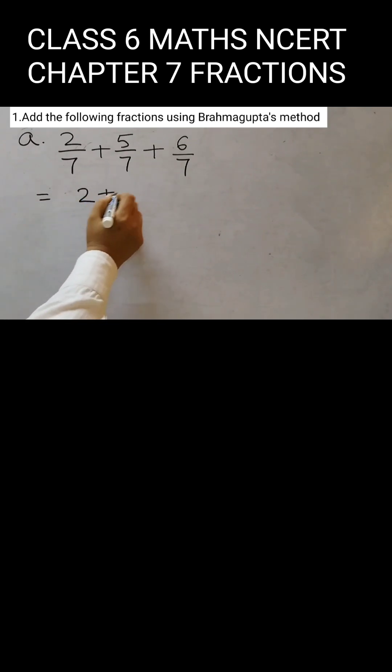So, this is 2 + 5 + 6 over 7. We don't add the denominators. We just add the numerators and keep the denominator as 7. Now, 2 + 5 = 7. 7 + 6 = 13. So, this will be 13/7.